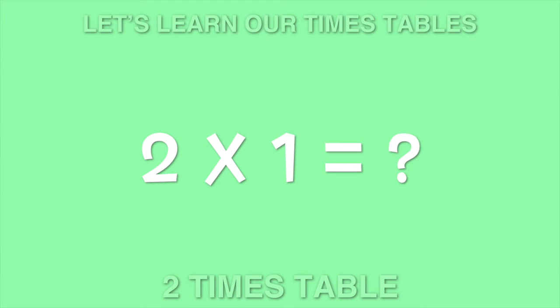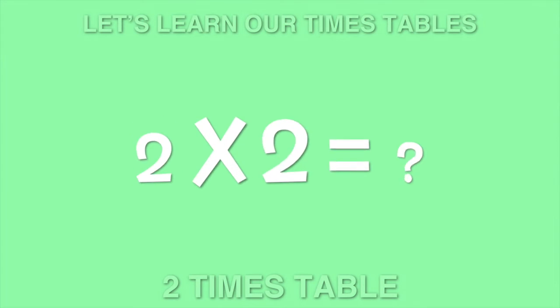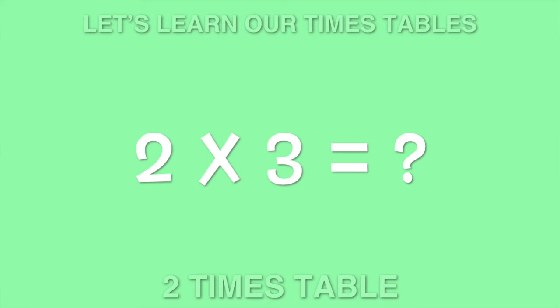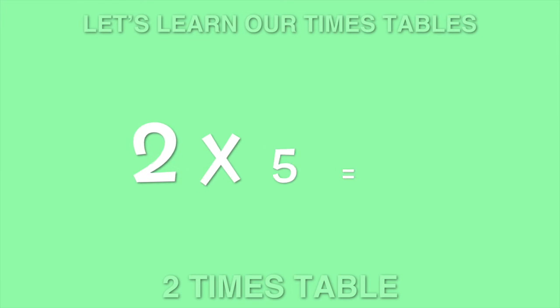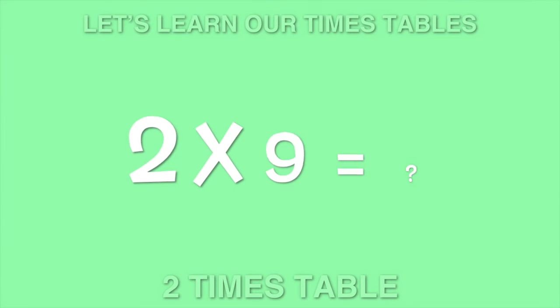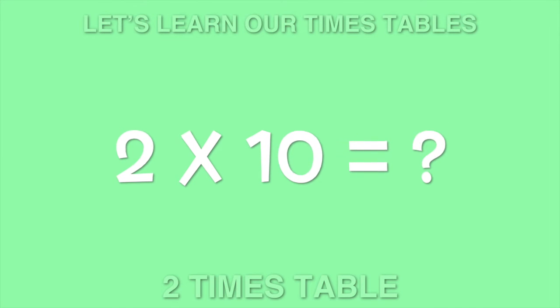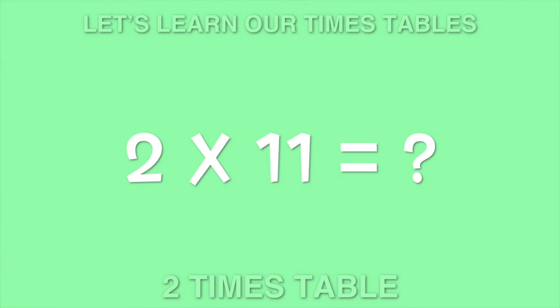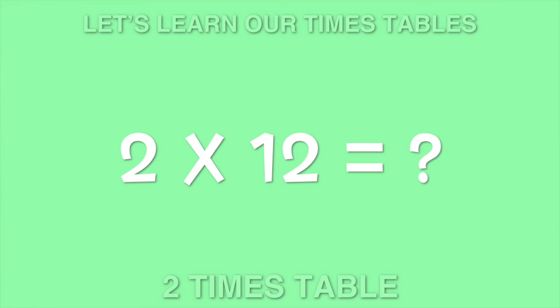Two times one is... Two times two is... Two times three is... Two times four is... Two times five is... Two times six is... Two times seven is... Two times eight is... Two times nine is... Two times ten is... Two times eleven is... Two times twelve is...